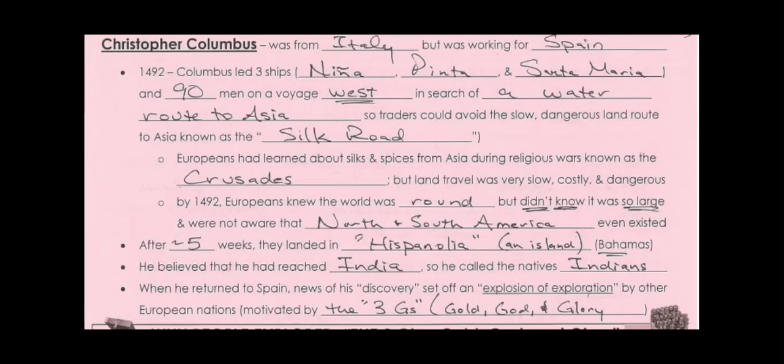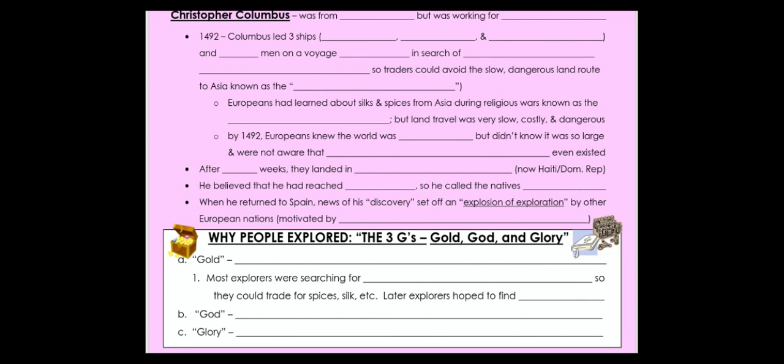We finished up the last lesson talking about Christopher Columbus and how he successfully sailed all the way around the world and reached India — actually, he did not do that, but he thought he did. He actually reached the Americas — not quite North America, but South America and the islands which he thought were the Indies, but are now known as the West Indies or the Caribbean Bahamas area.